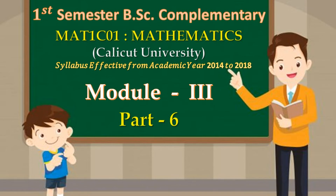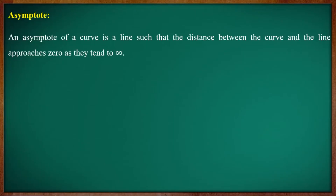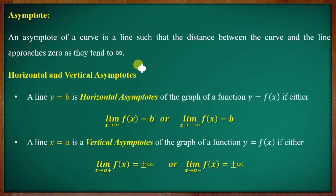Part 6 will discuss the topic: Asymptotic Behavior of a Function. An asymptote of a curve is a line such that the distance between the curve and the line approaches 0 as they tend to infinity. Asymptotes of a curve can be horizontal or vertical.